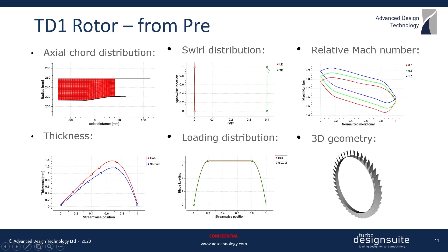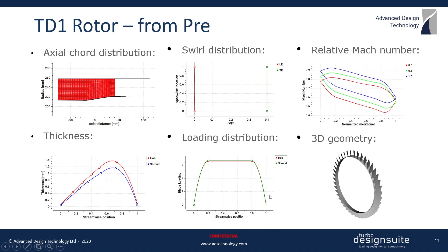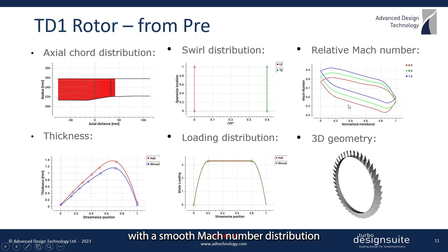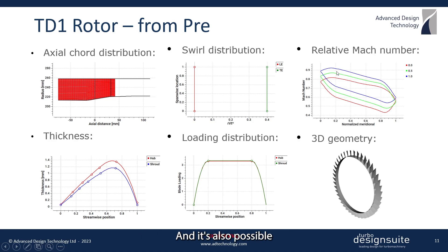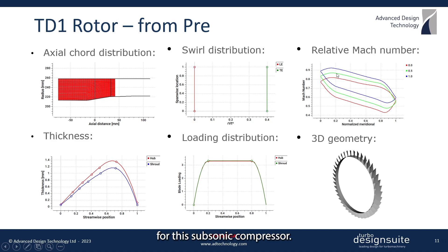The loading distribution is mid-loaded for this initial design, and then these inputs result in the 3D geometry of the rotor as we can see here, along with a smooth Mach number distribution throughout the blade surface. It's also possible to ensure that the peak value is less than 1 for this subsonic compressor.